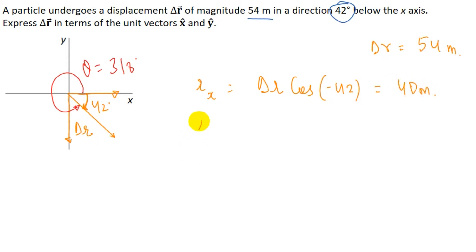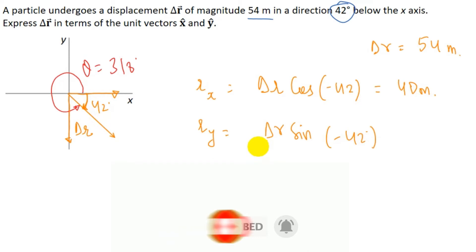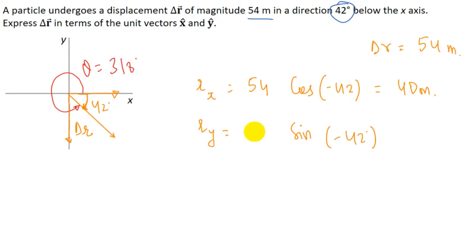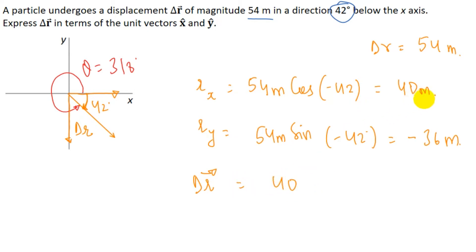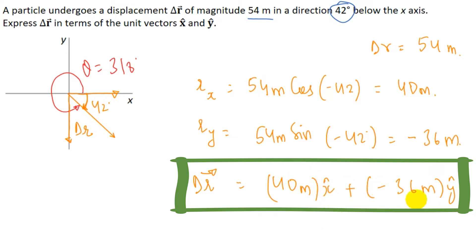Now the y-component Ry = Delta R × sine(−42°) = 54 × sine(−42°), which gives us minus 36 meters. So, Delta R = 40 meter x-cap + (−36 meter) y-cap, or written more cleanly, 40 meter x-cap − 36 meter y-cap. This is the result for this question.